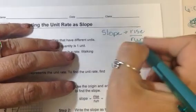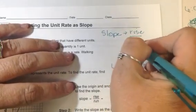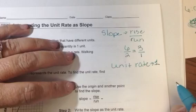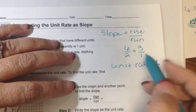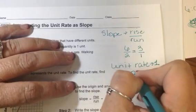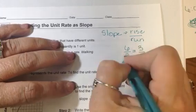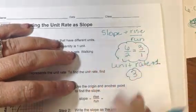I can do that by either reducing this to 3 over 1, or I can just say 6 divided by 2, and either way, that gives me 3. And so my unit rate for this slope is 3.